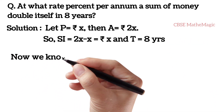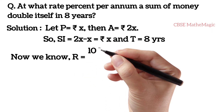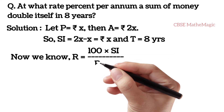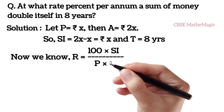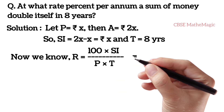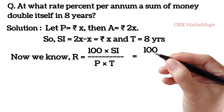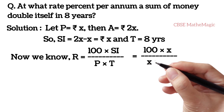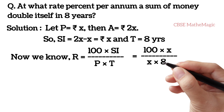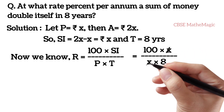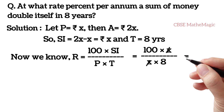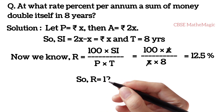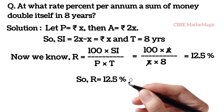R is equal to 100 into SI by P into T, that is 100 into x by x into 8. Now x and x are cancelled. And if we divide 100 by 8, we get 12.5%. So the rate of interest is 12.5% per annum.